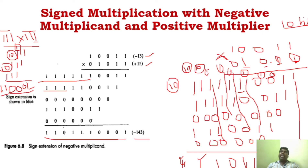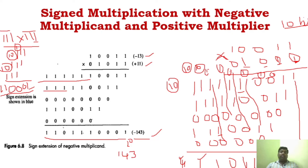So signed multiplication is nothing but normal multiplication where we extend the sign bit. We are taking minus 13 and plus 11, doing normal multiplication, and for remaining bits extending the sign bit — 1 extension if the sign bit is 1, and 0 extension if the sign bit is 0 — then performing normal addition. If you substitute powers of 2 from 2⁰ through 2⁸, you will get minus 143. You can cross-verify by converting 143 to binary and taking its 2's complement.